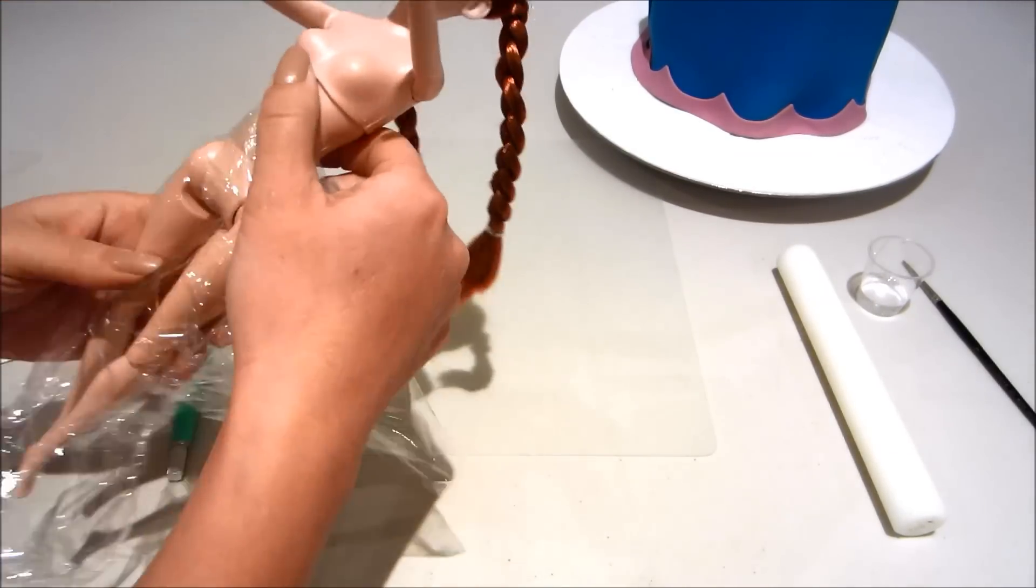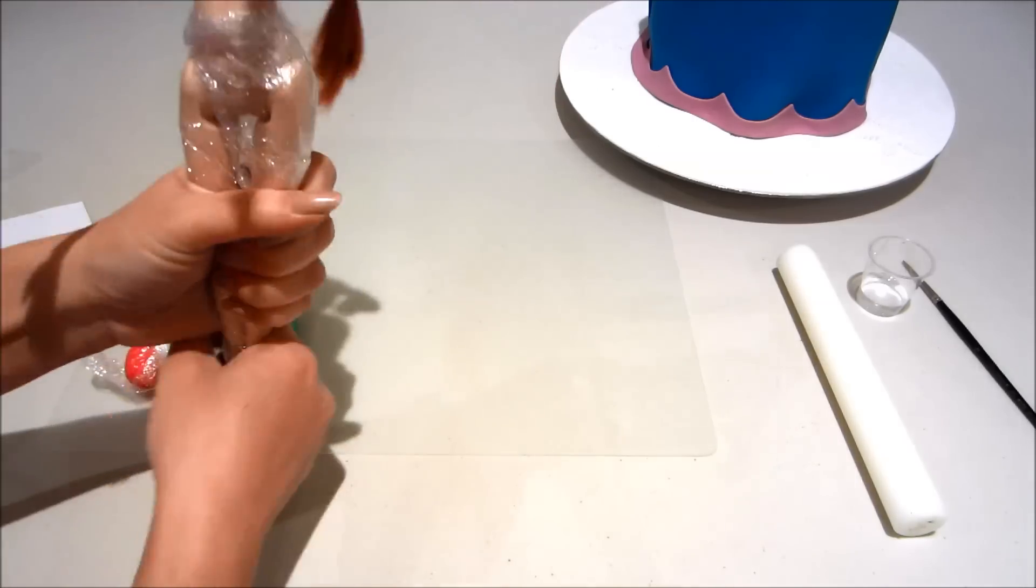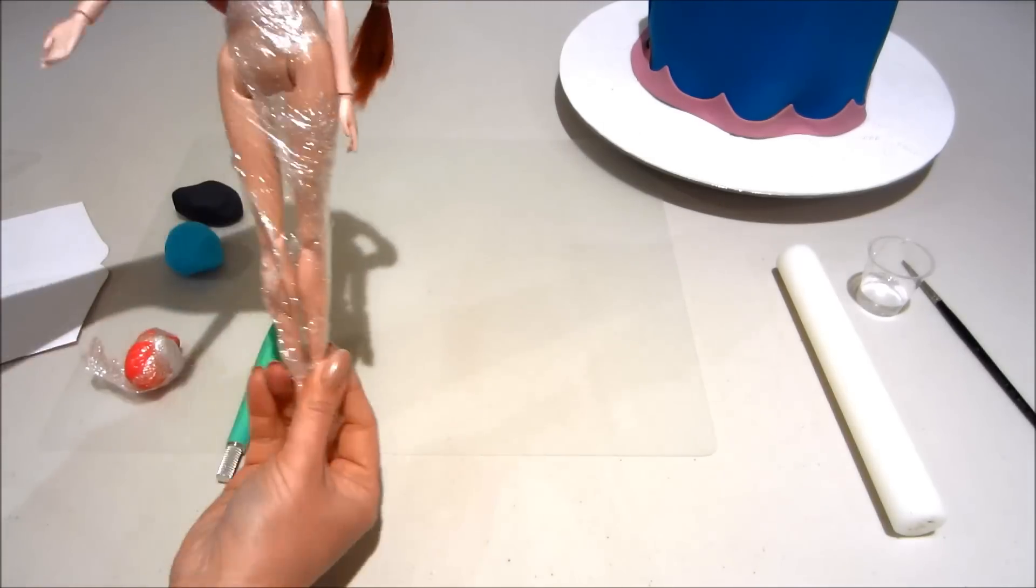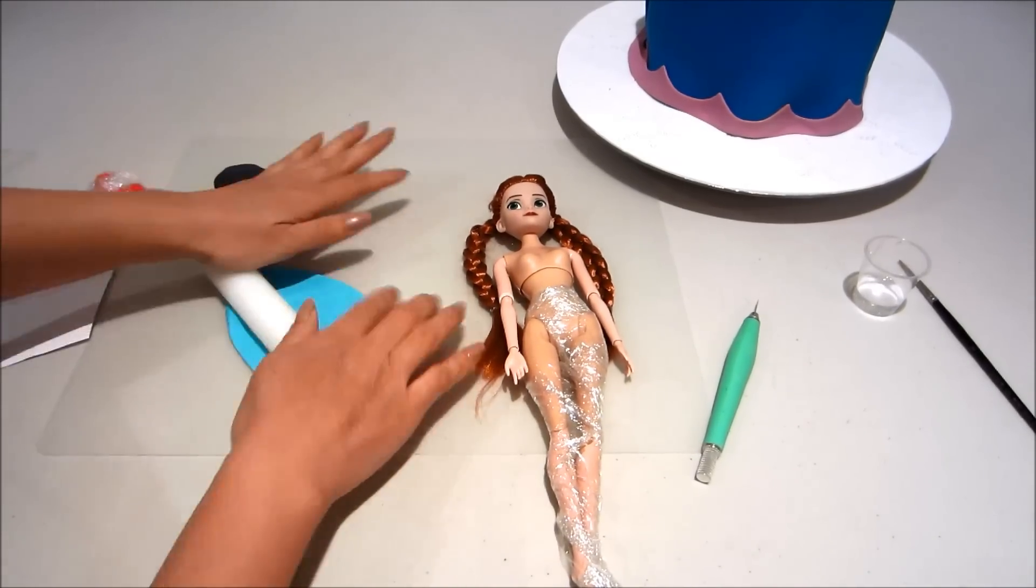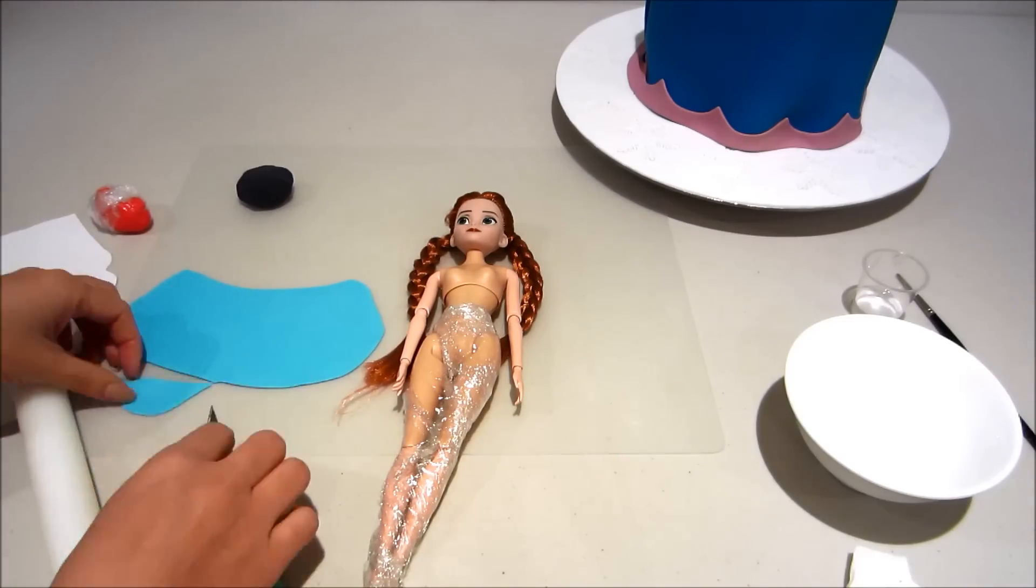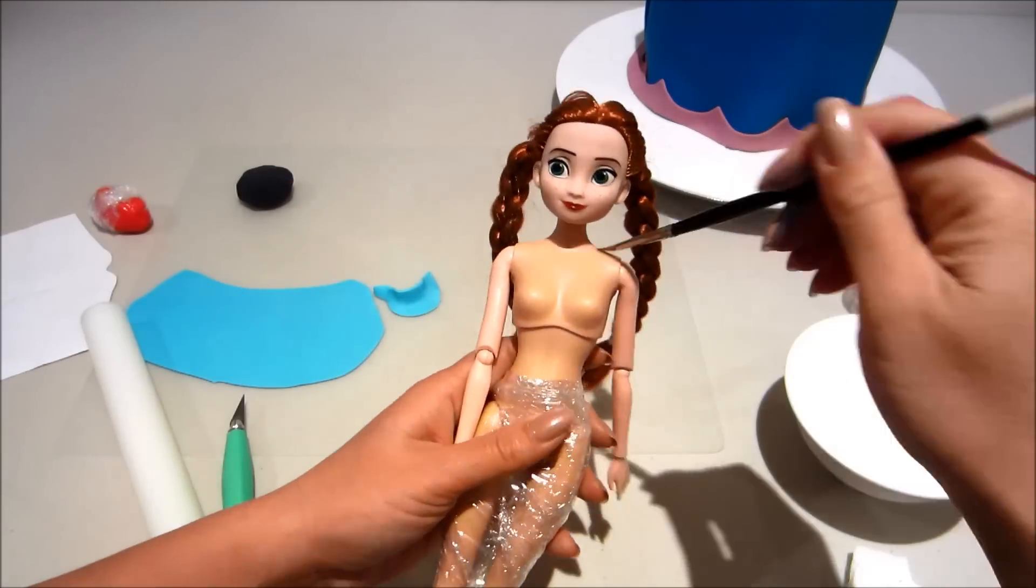Now wrapping up my Anna doll with a little bit of cling wrap so that her legs don't get all covered in buttercream. Now I've moved onto some light blue fondant. I've cut out a little strip just to cover her neck and I'm attaching with a little bit of water.